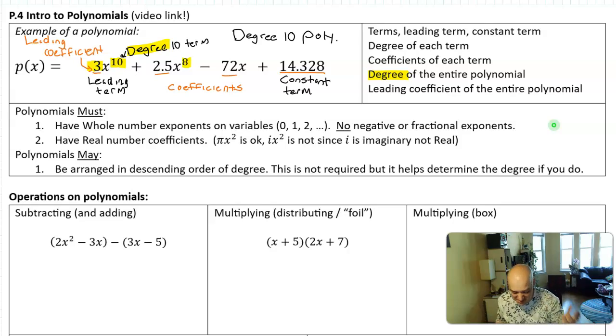The coefficients of the polynomial, again, that's the 3, the 2.5, and the 72, and the 14. Those can be any real number. Remember, real numbers are basically anything you can find on a number line, including things like pi. The only thing that you can't have as a coefficient is something like an imaginary number, but otherwise anything is allowed for the coefficients. Now if you find yourself doing something like pi x squared, you're having a pretty bad day, but it's technically a polynomial.